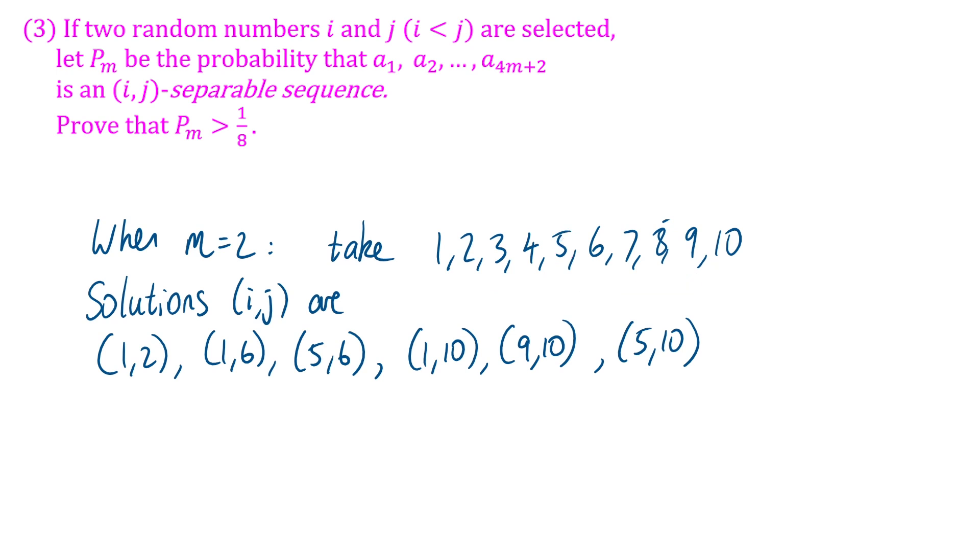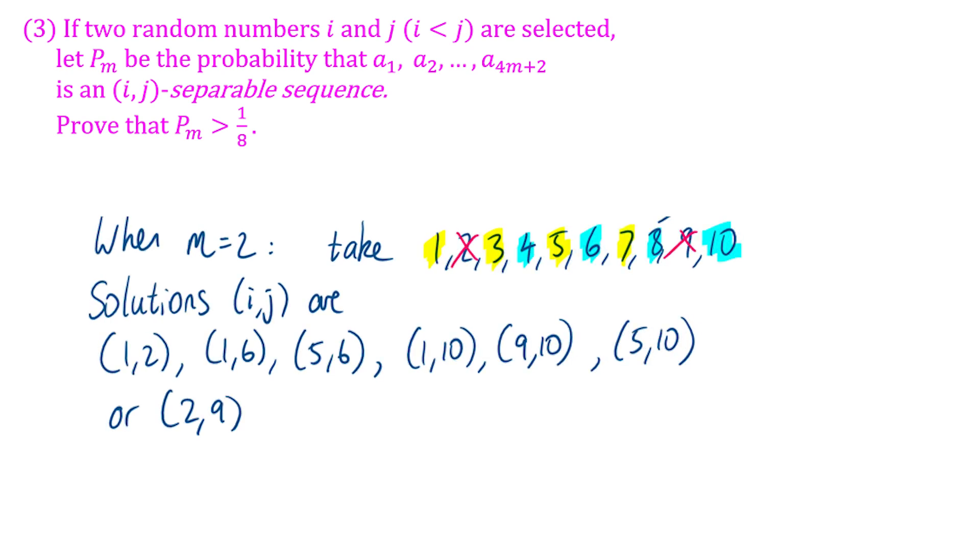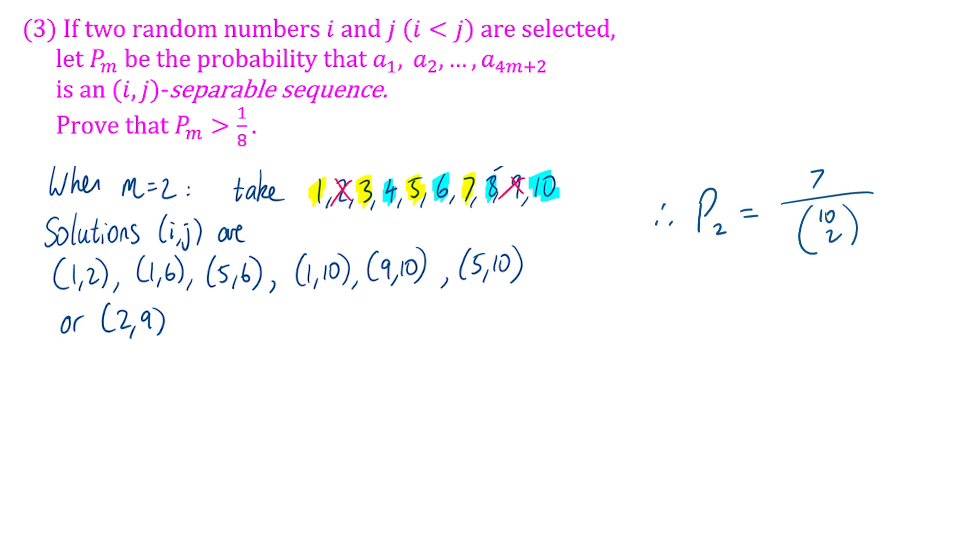It's similar to what we did in part two, actually. In part two, we looked at (2,13), which was the second term and the second last term. We can do a similar thing here by removing (2,9). We would have then two arithmetic sequences as 1, 3, 5, 7, and 4, 6, 8, 10. So that gives seven choices, seven solutions, seven pairs (i,j). Out of a total, the total number of pairs there is 10 choose 2, that's 45. So 7 out of 45, well, it's more than 1 out of 8. So that's good. And we want to show that there's always going to be more than 1 out of 8 for any m value.